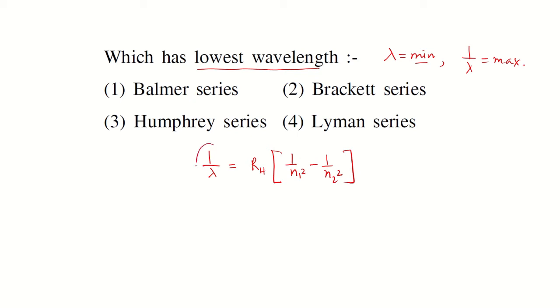Now we see the value of 1 by lambda is maximum. When does it become maximum? The value of 1 by lambda becomes maximum when the value of 1 by n1 square must be maximum.